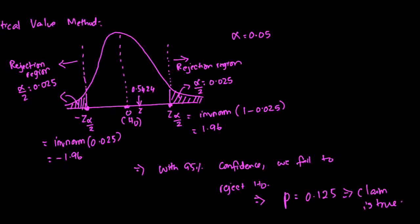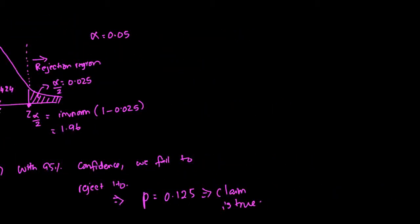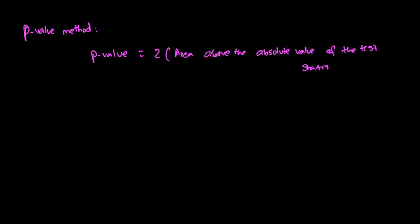The second approach to obtain a conclusion is the p-value method. With the p-value method, you have to find the p-value. P-value is dependent on the type of the test. Since this is a two-tailed test, the p-value is actually two times the area above the absolute value of the test statistic. I highly recommend that you watch the videos on my channel that talk about normal CDFs and finding probabilities using a normal distribution.